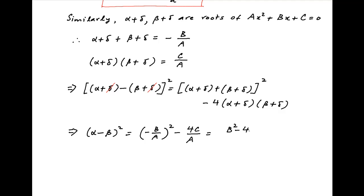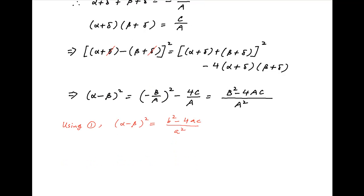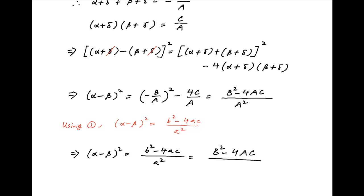The right-hand side is equal to (B² minus 4AC) upon A². Now, from Result 1 derived earlier, (alpha minus beta)² is equal to (b² minus 4ac) upon a². It therefore follows that (b² minus 4ac) upon a² is equal to (B² minus 4AC) upon A², and this is the required result.